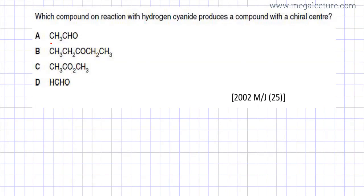The first option, option A, is ethanal — CH₃CHO. Let me draw that: it has a C double bond O and H, with this carbon bonded to three hydrogen atoms. So this is ethanal; this is option A.